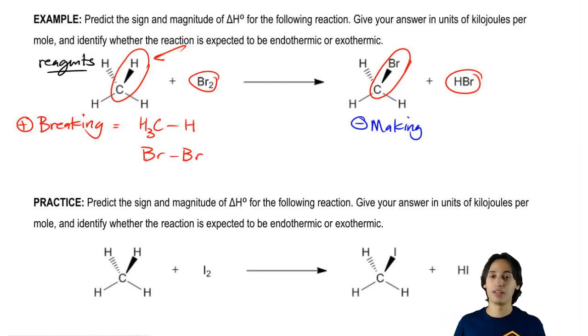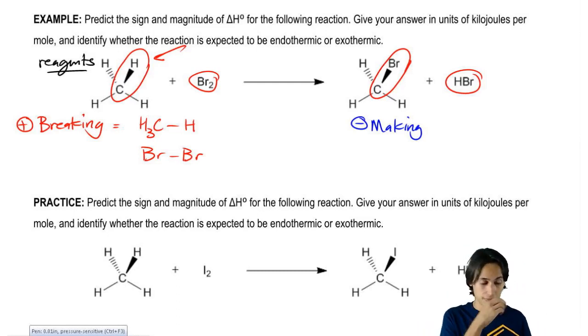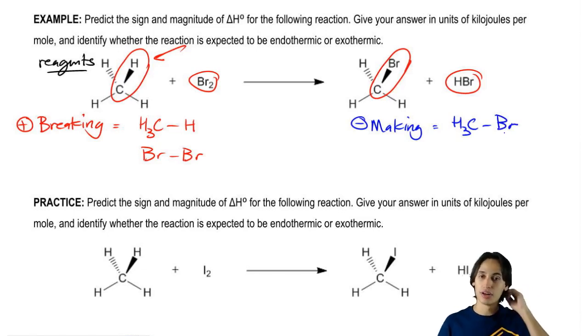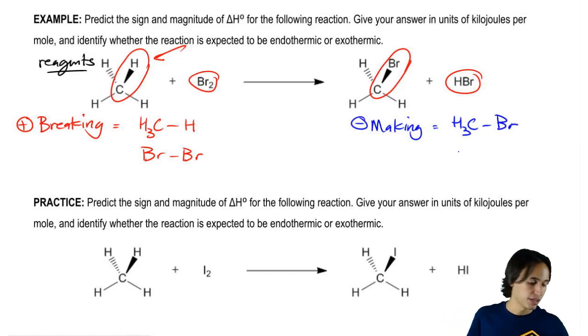Now let's look at my negative side, my exothermic side. Basically the bonds that I'm making are equal to C-Br because that's a new bond that didn't exist before. And another one is H-Br. That's a bond that didn't exist before.